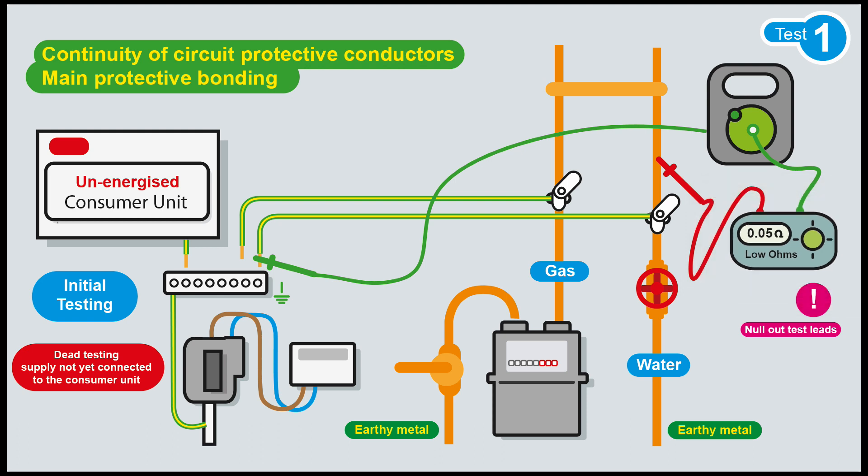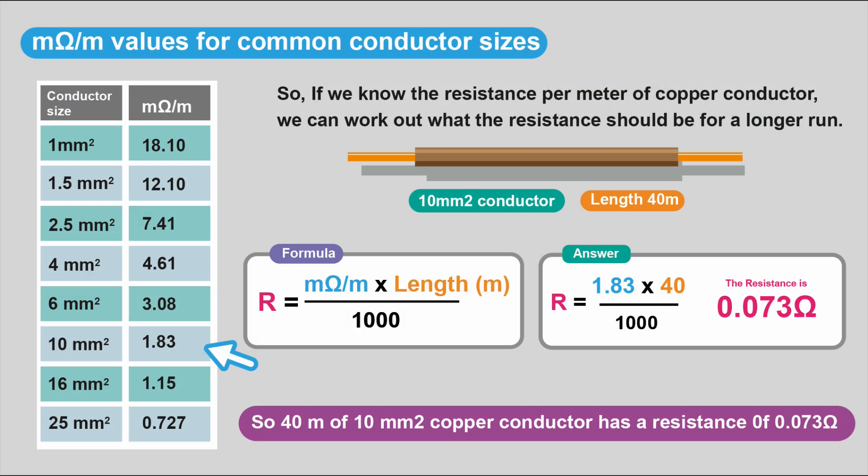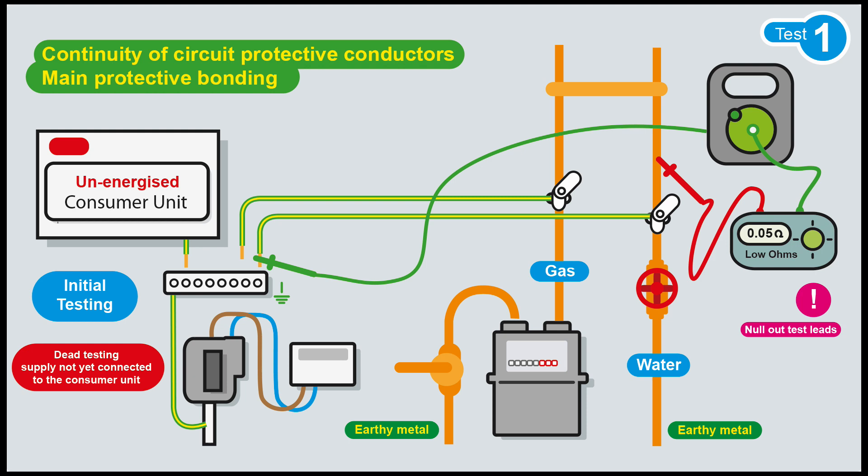Nobody's quite sure where that number comes from, to be honest, but that's the guidance that we're being given. Remember in the previous example, we got 0.073 ohms, and that was for 40 meters of 10 mil conductor. So if it needs to be less than 0.05, we know that 40 meters is going to be too long.